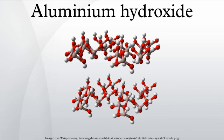Aluminium hydroxide, Al(OH)3, archaically called hydrate of alumina or alumina hydrate, is found in nature as the mineral gibbsite and its three much more rare polymorphs: bayerite, doyleite, and nordstrandite. Closely related are aluminium oxide hydroxide, AlO(OH), and aluminium oxide, Al2O3, differing only by loss of water. These compounds together are the major components of the aluminium ore bauxite.